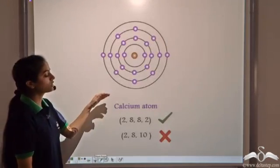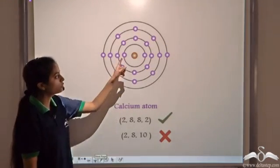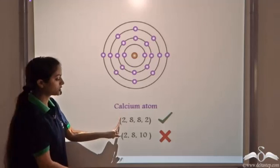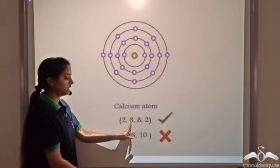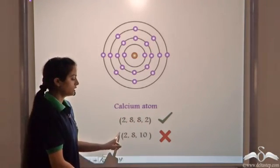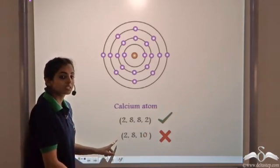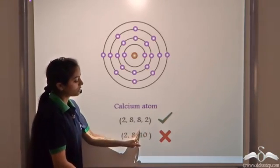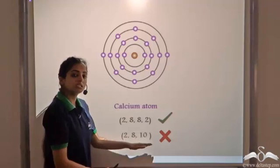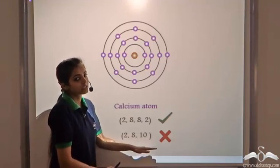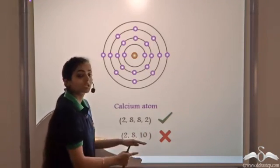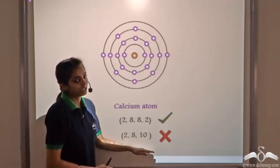The electronic configuration of calcium is 2, 8, 8, 2. That is: K shell has 2, L shell has 8, M shell has 8, and N shell has 2. We never write 2, 8, 10 — because whenever you see the outermost shell having more than 8 electrons, that is wrong. Always keep in mind that the outermost shell cannot have more than 8 electrons.